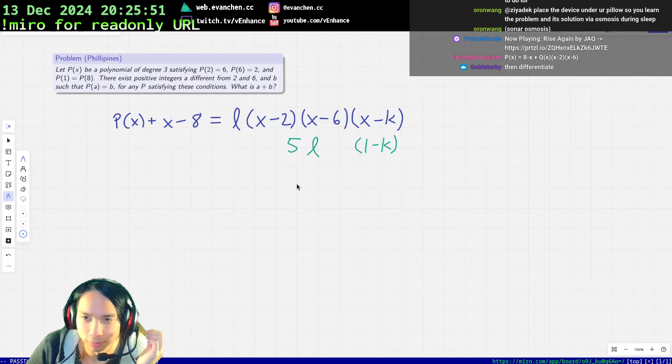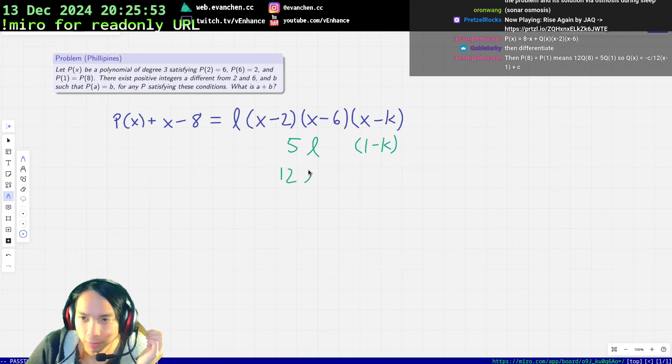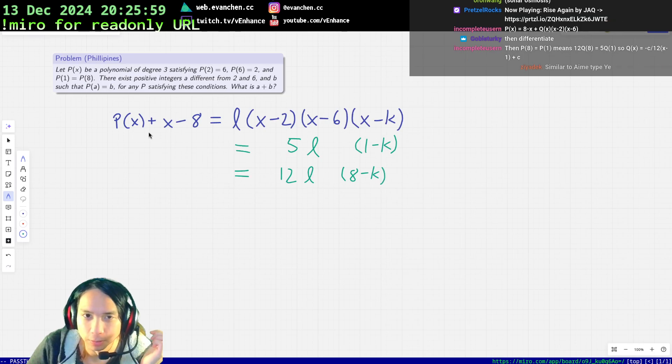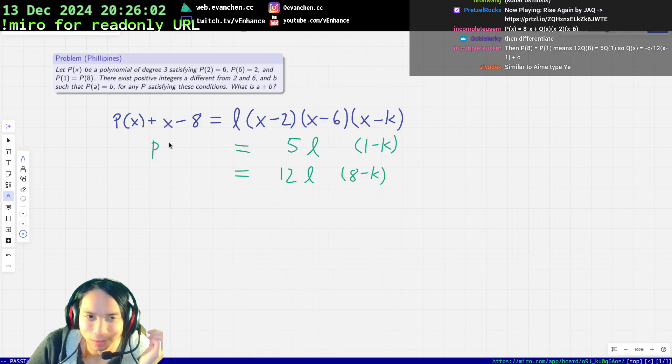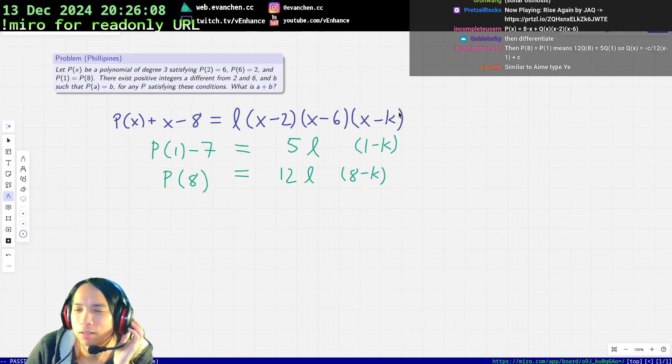When I plug in 8 it's like 12 l times (a minus k). And these are equal. I feel like I'm being baited.